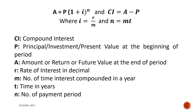Where I equals R divided by M, and N equals M multiplied by T. R is the rate of interest in decimal, T is time in years, and M is the number of times interest is compounded in a year.